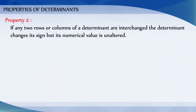Property 2: If any two rows or columns of a determinant are interchanged, then the sign of the determinant changes.